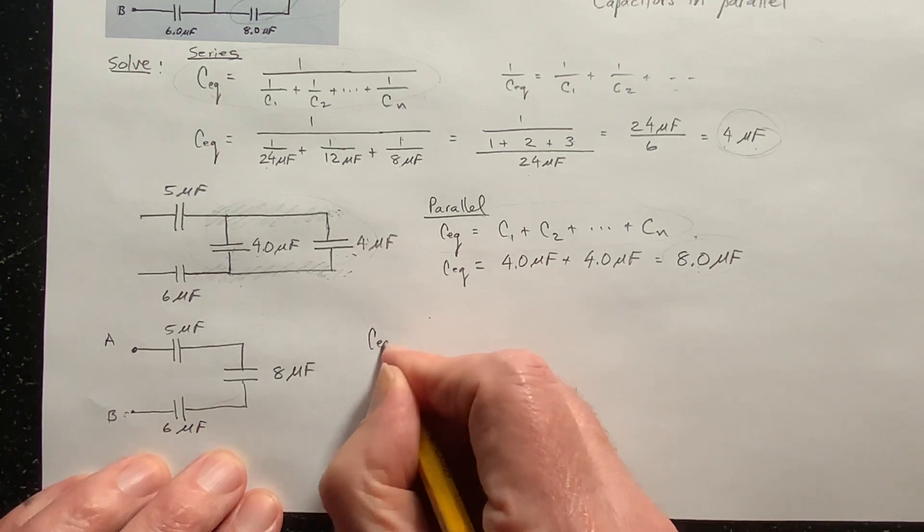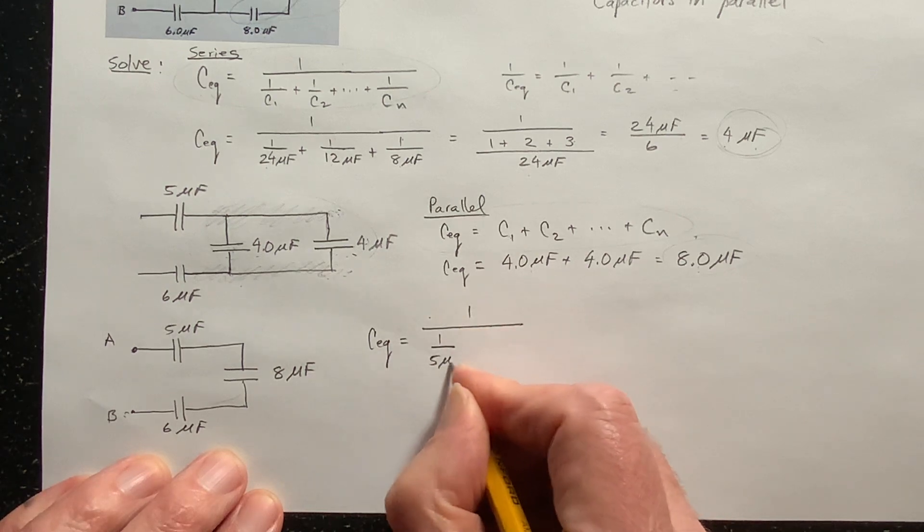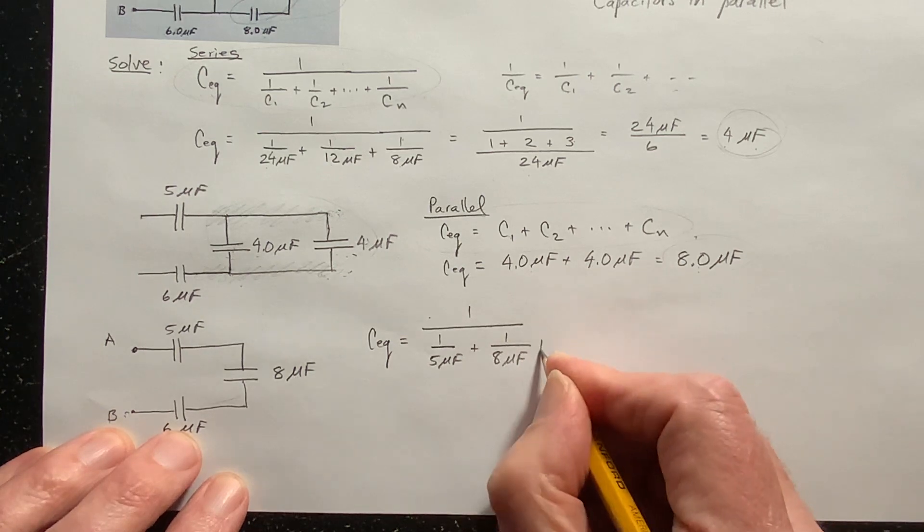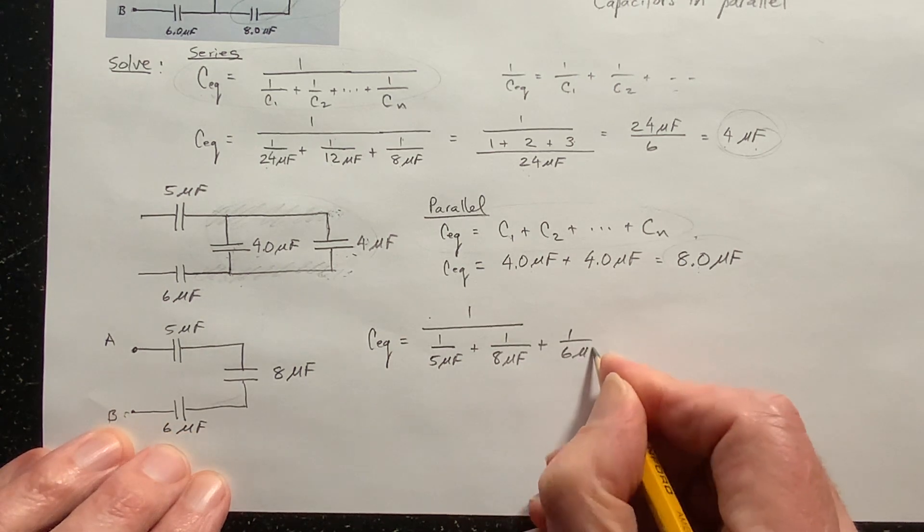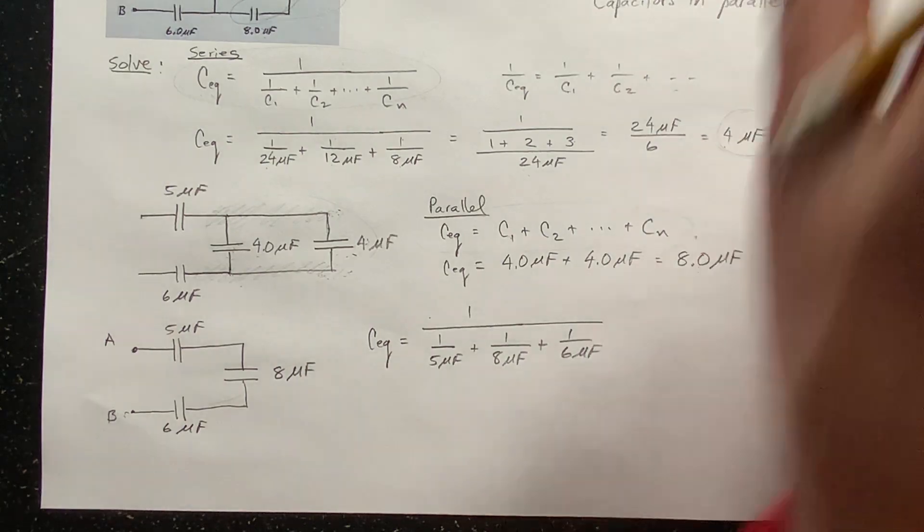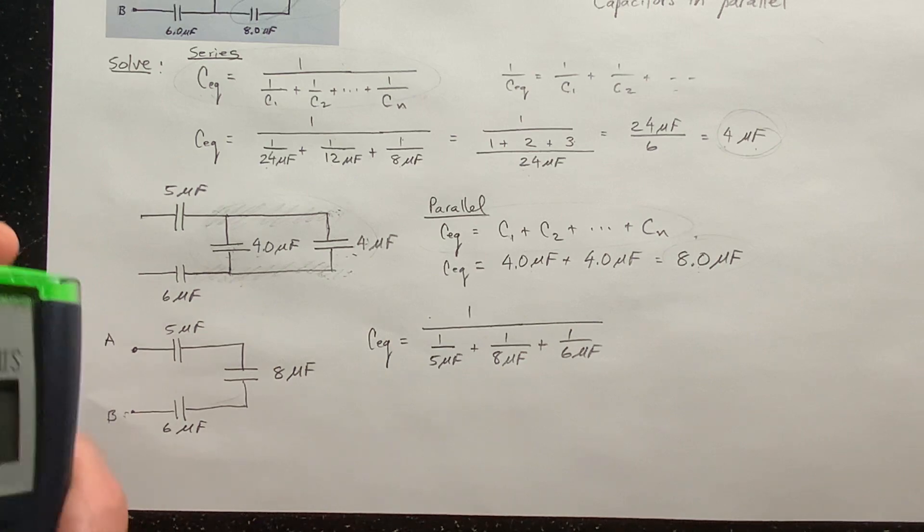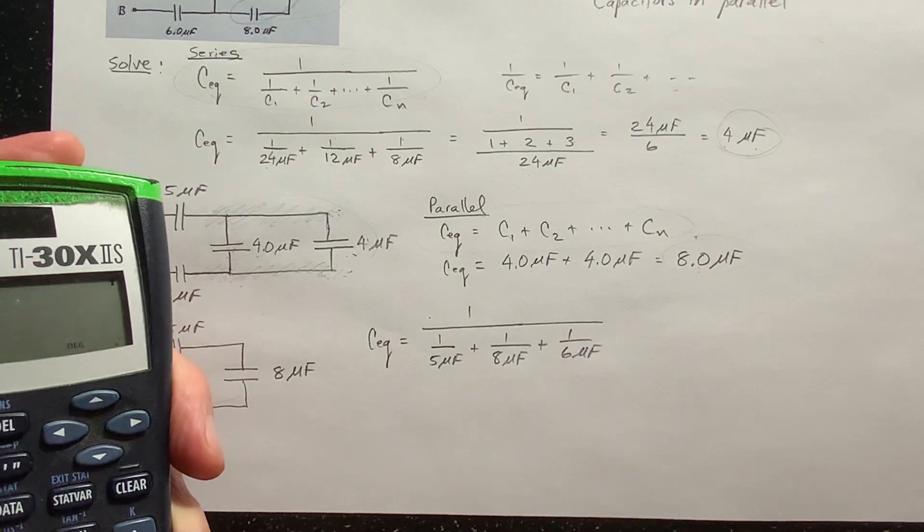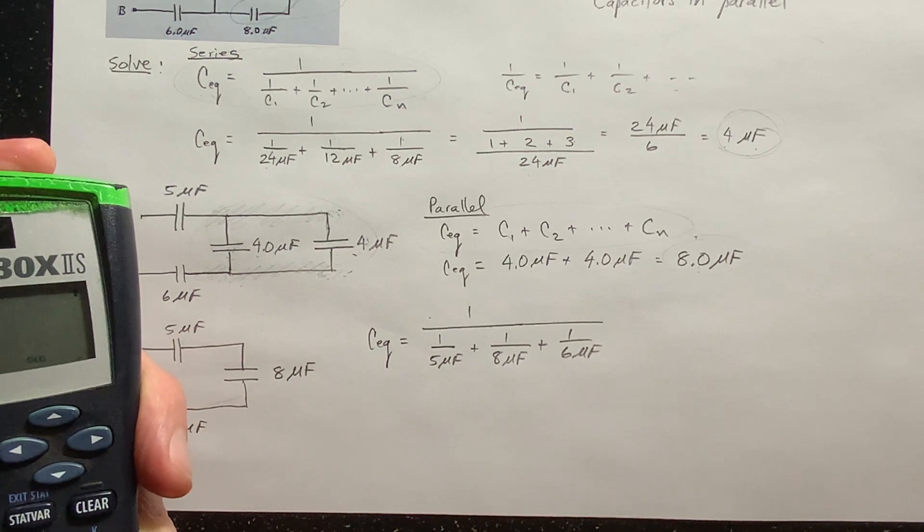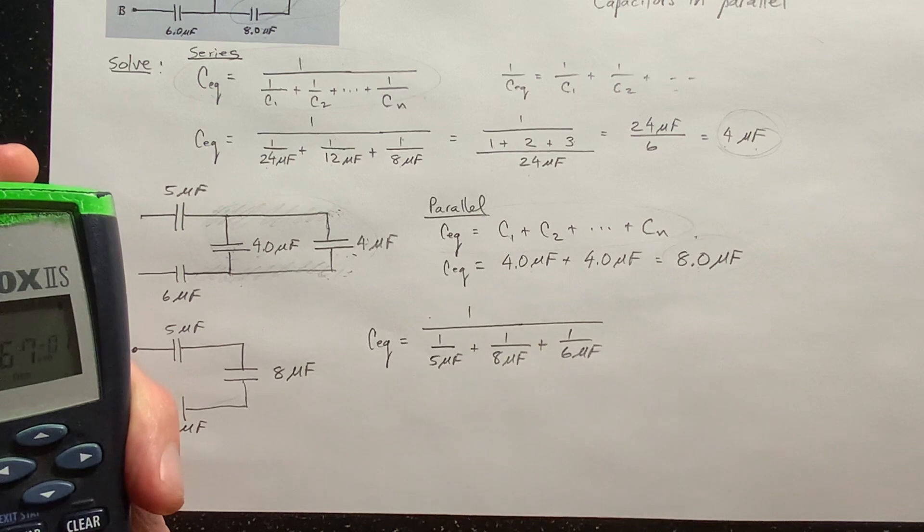And this is my final equivalent capacitance. It's equal to one over one over five microfarads plus one over eight microfarads plus one over six microfarads. Now this one, I don't see any, I mean, it's probably pretty easy to find a common denominator there, but I'm not going to worry about that. I'm just going to go to the trusty solar powered calculator and I just go five reciprocate plus eight reciprocate plus six reciprocate equals. And then I have to take that and remember to reciprocate that equals.